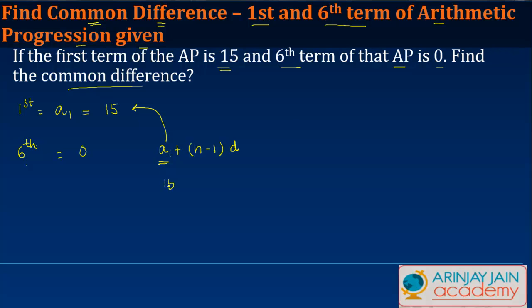Plus n is the number of term, so if this is the sixth term, n over here will be 6 minus 1 times the difference. Now difference we don't know what it is, but we are told that this term is equal to 0. Now if that be the case, isn't this a simple exercise?